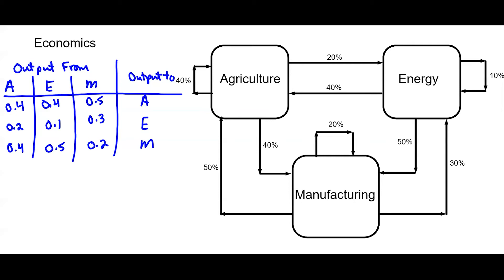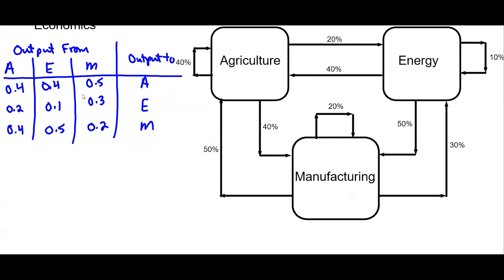So these give us a way to write an equation for the outputs. So let's start with agriculture. 40 percent of agriculture plus 40 percent of energy plus 50 percent of machinery is going to equal the total output to agriculture.